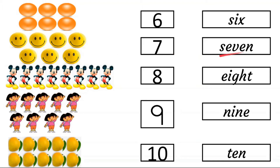7. How many Mickey Mouse are here? 1, 2, 3, 4, 5, 6, 7, 8. 8. E, I, G, H, T.